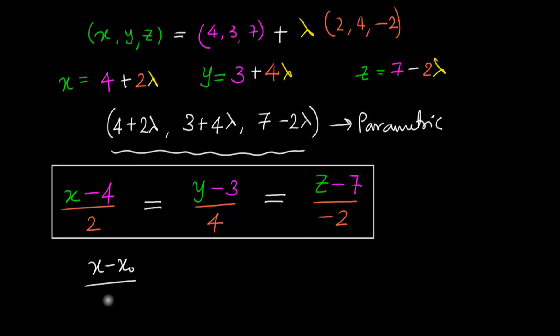So, l should be equal to y minus the y-coordinate of a point on a straight line, divided by m, and that should be equal to z minus z-coordinate of a point that lies on a straight line, divided by n. Where l, m, n are the direction ratios of my straight line.